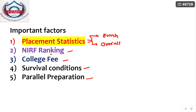The next factor is NIRF ranking. The placement statistics and NIRF ranking lists will almost be the same, because NIRF ranking is based on academics, placement records, library facilities, infrastructure, and other things. So the placement statistics priority list and NIRF ranking priority list will likely align.